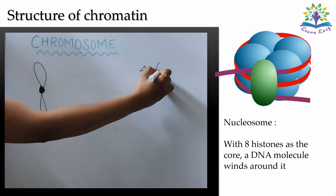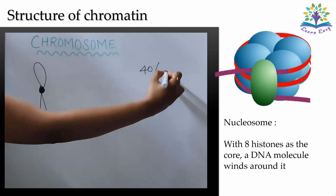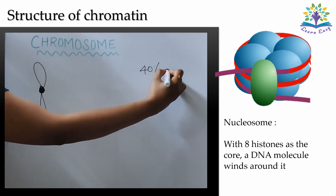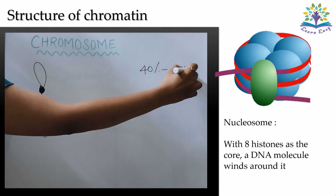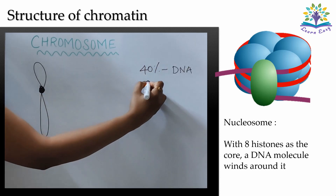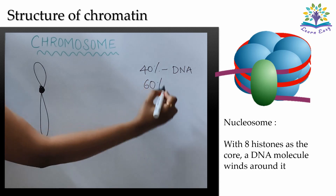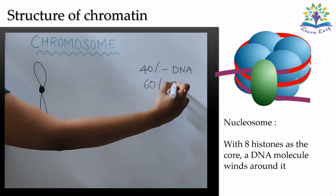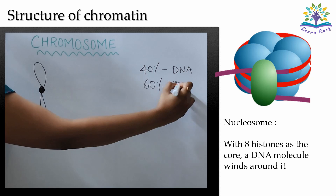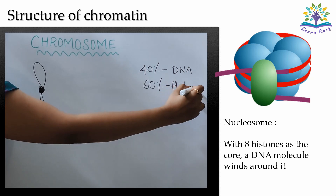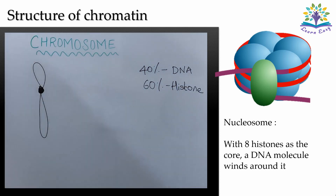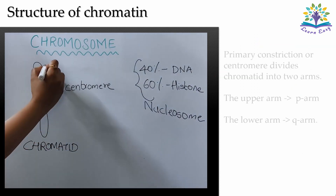40% of chromatin is DNA and the remaining 60% is made of a protein called histone. With 8 histones as the core, a DNA molecule winds around it forming a complex unit called nucleosome. Millions of these units coil and super-coil in order to form a chromosome.